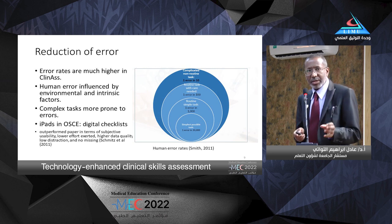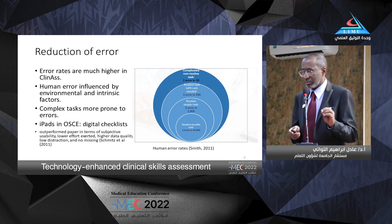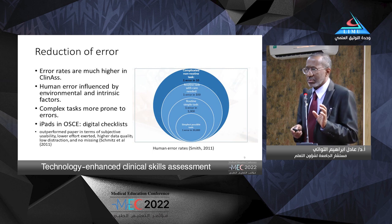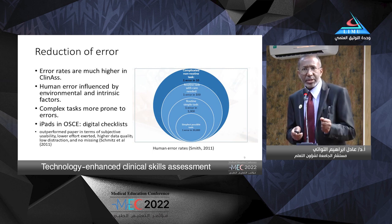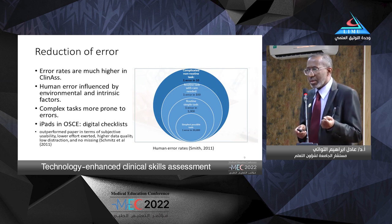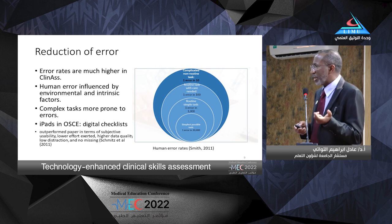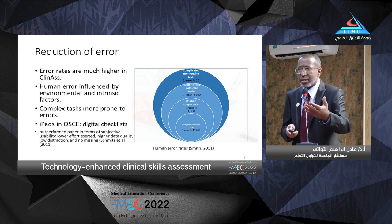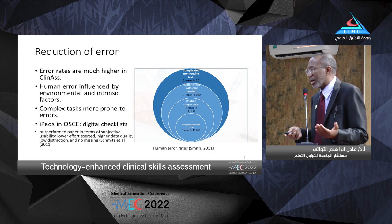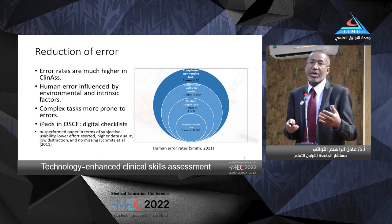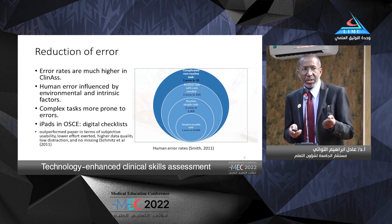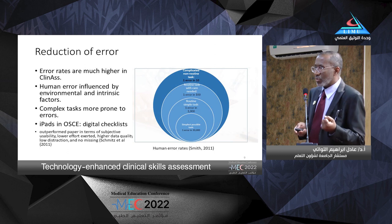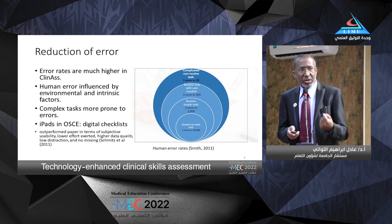The more complex a task is, the higher the chance of committing an error. Clinical skills assessment is a complex task, and there are many factors affecting the performance outcome — for example, the examiner behavior, the student behavior, gender, mood, the interaction between the student and the examiner, and the setup of the exam cell. So there are many factors which affect the outcome and the measurement, and it would be good if we can devise a way to minimize their effect. Technology does help in that.